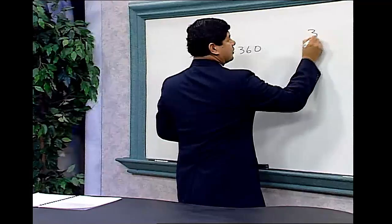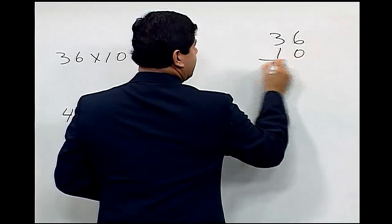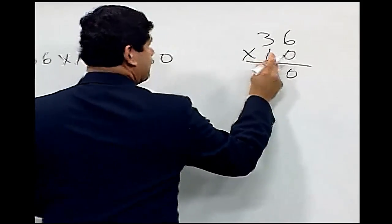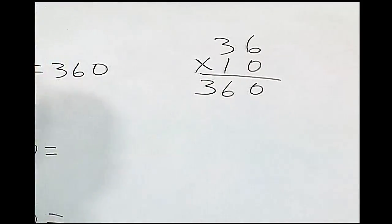We can also demonstrate that as 36 times 10. Just bring down the 0. 1 times 6 is 6. 1 times 3 is 3. 360.